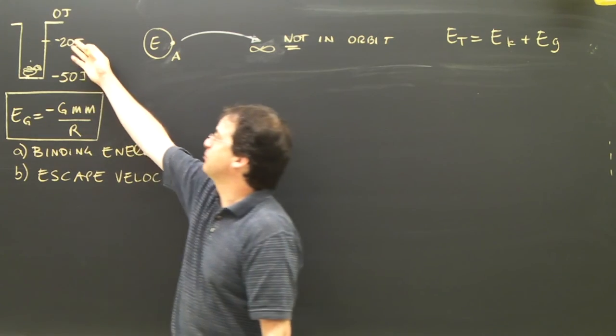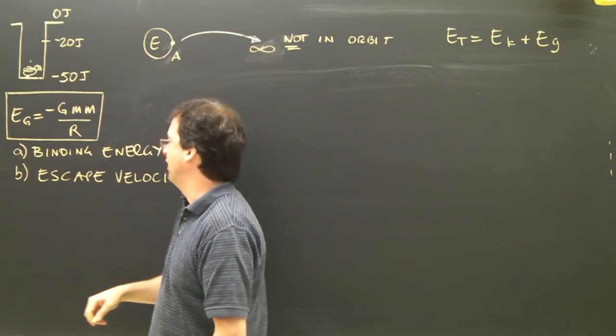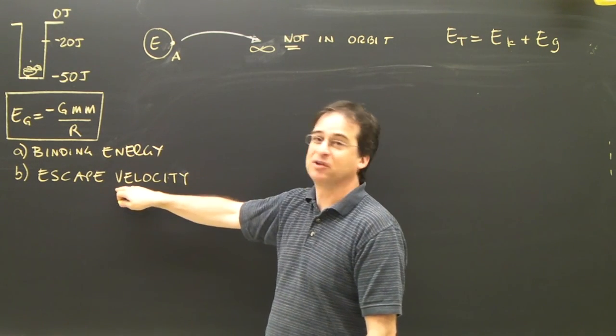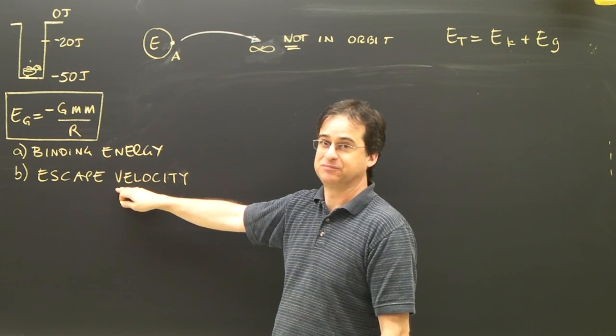So here's my example again with the chicken in the well. And what I want to know is something called binding energy and something called the escape velocity.